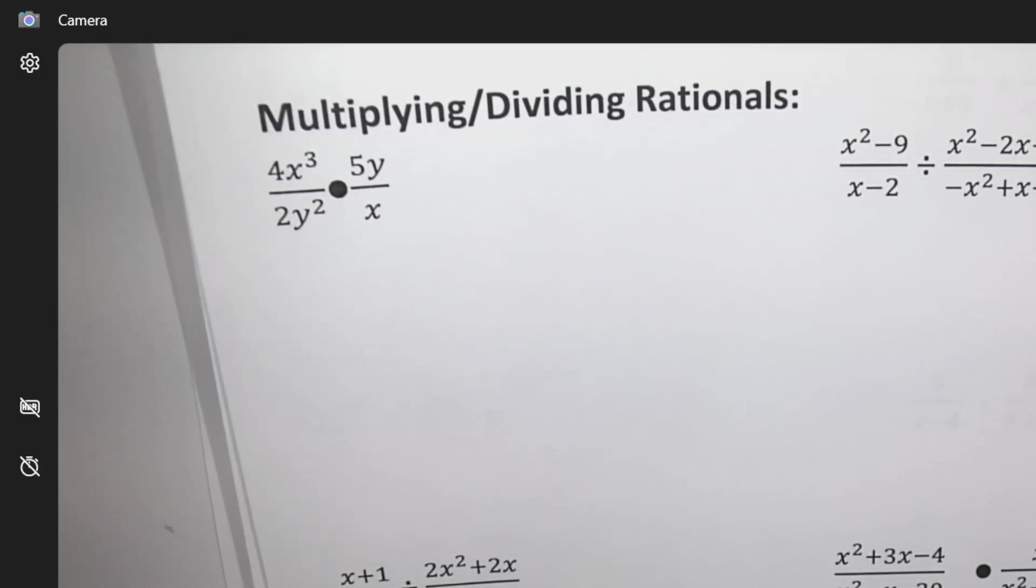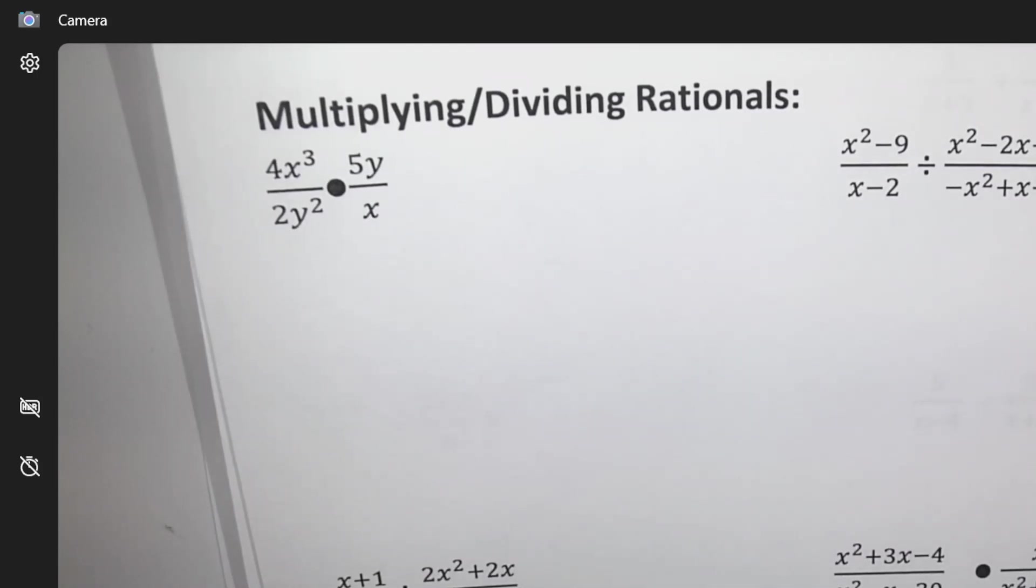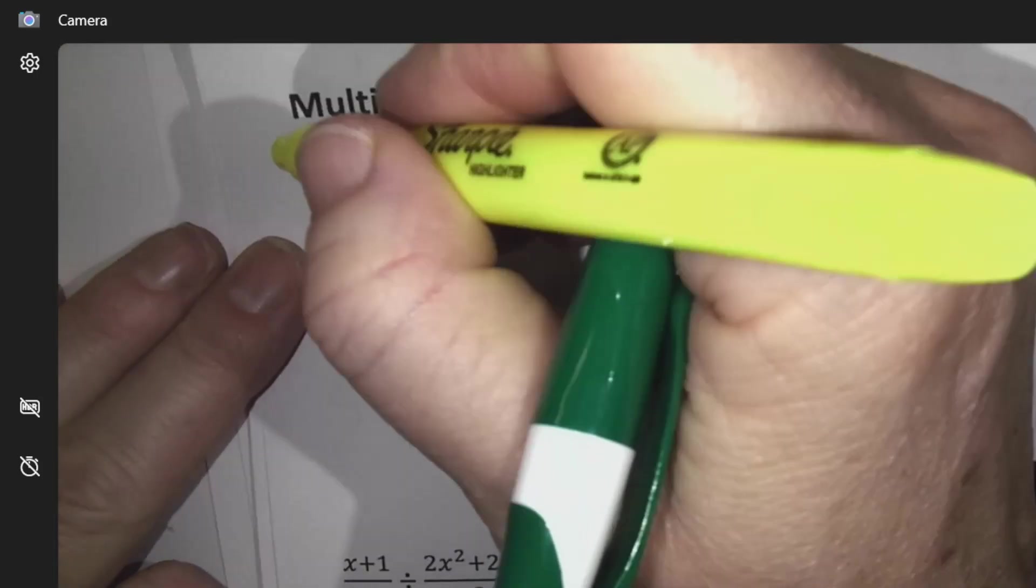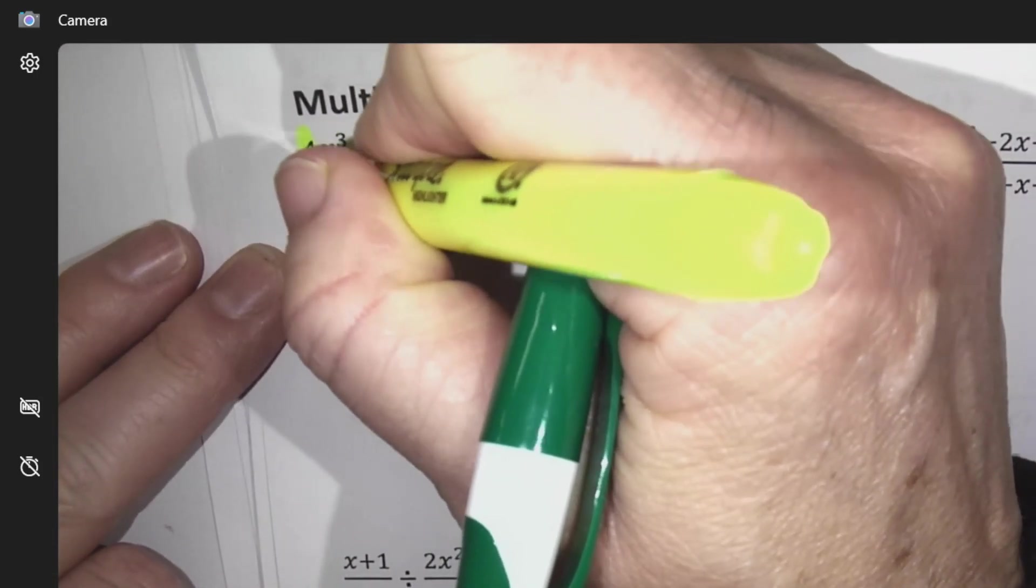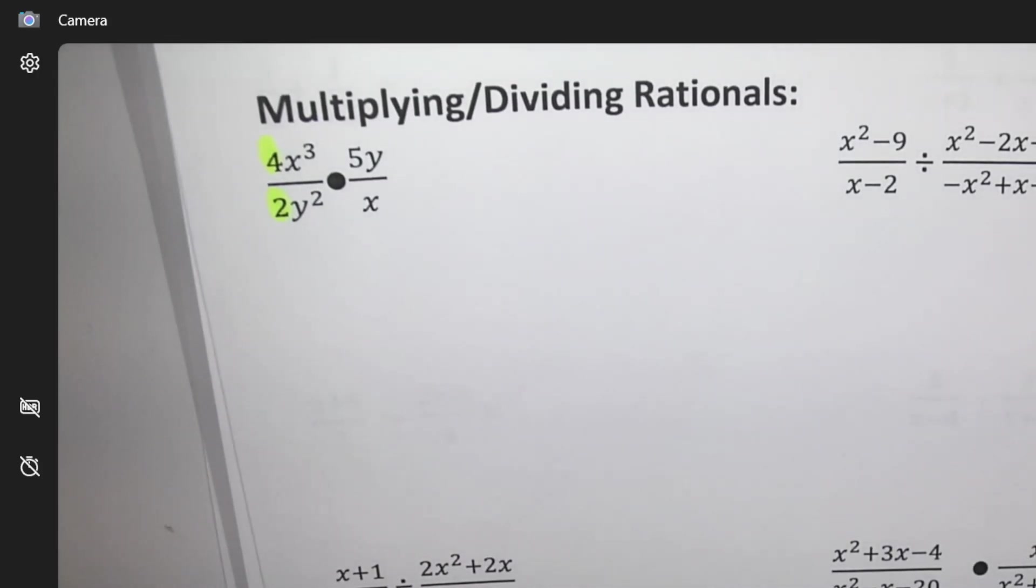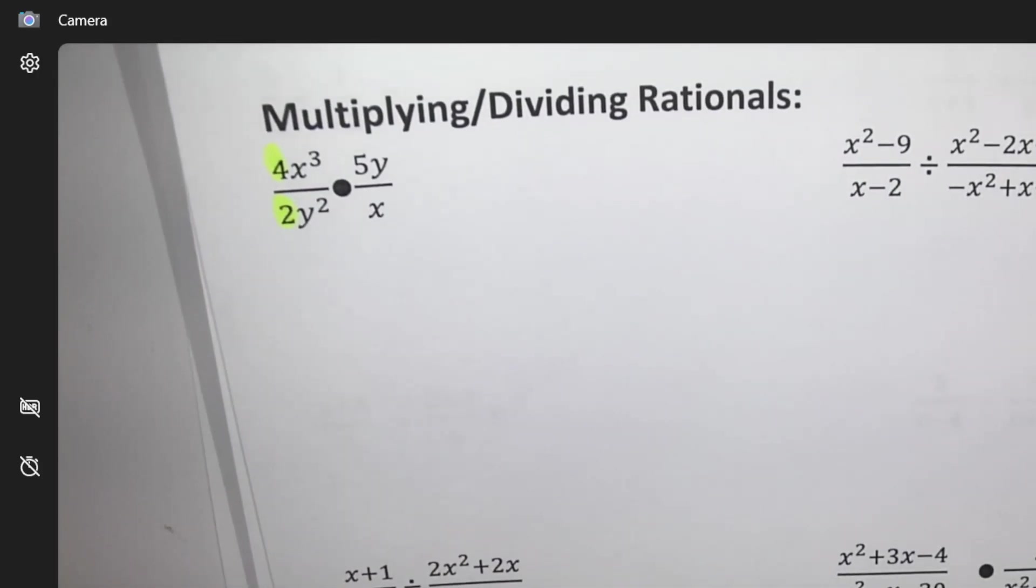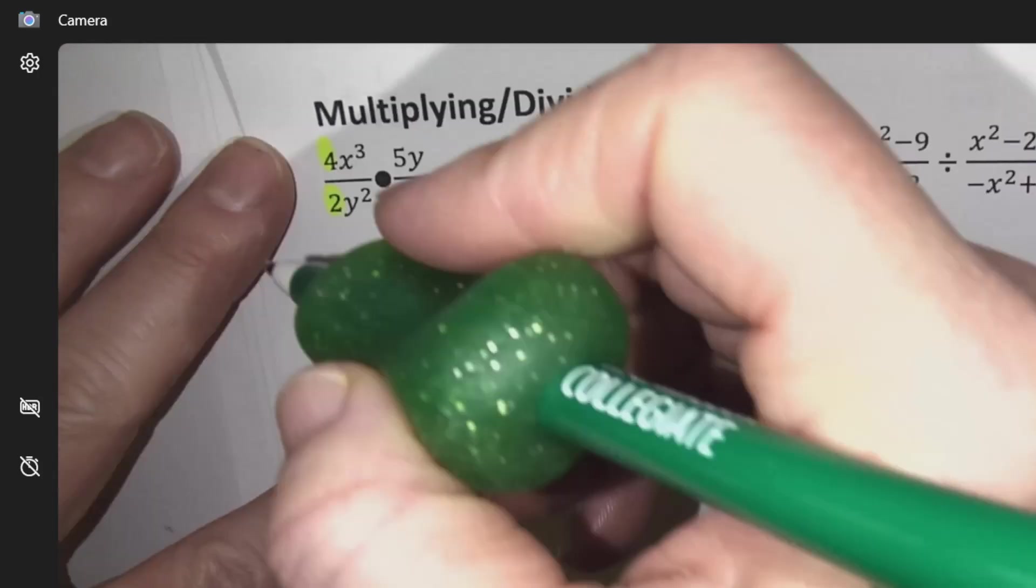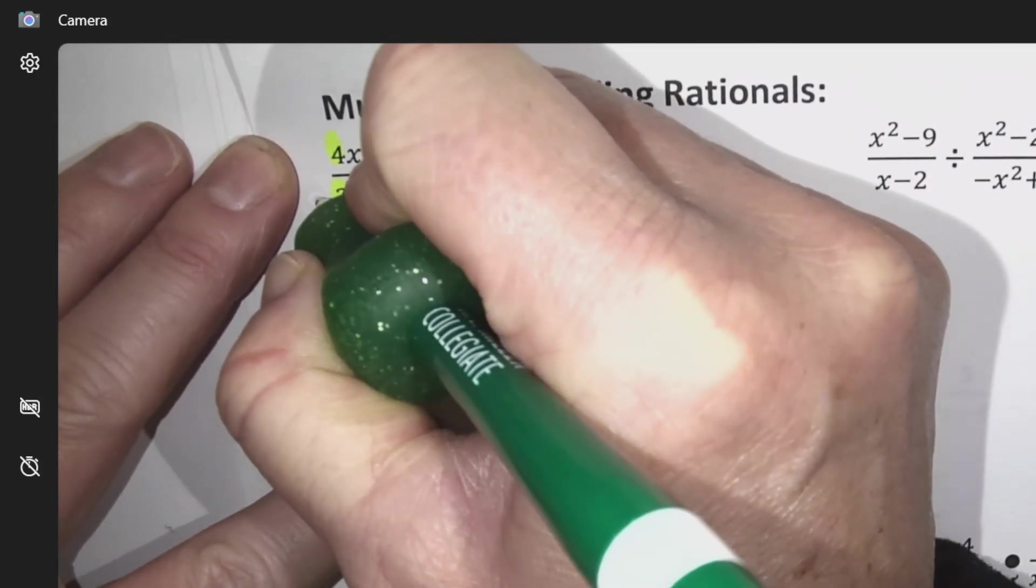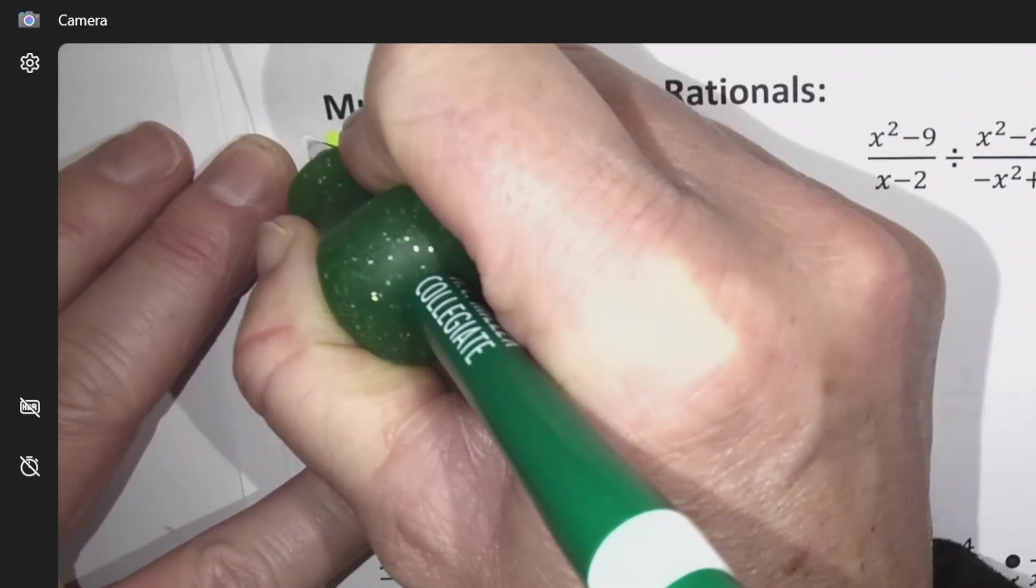I'm going to look at the four on the top and the two on the bottom. I can reduce, I can divide each by a two. So if I divide by a two, this becomes a one, this becomes a two.